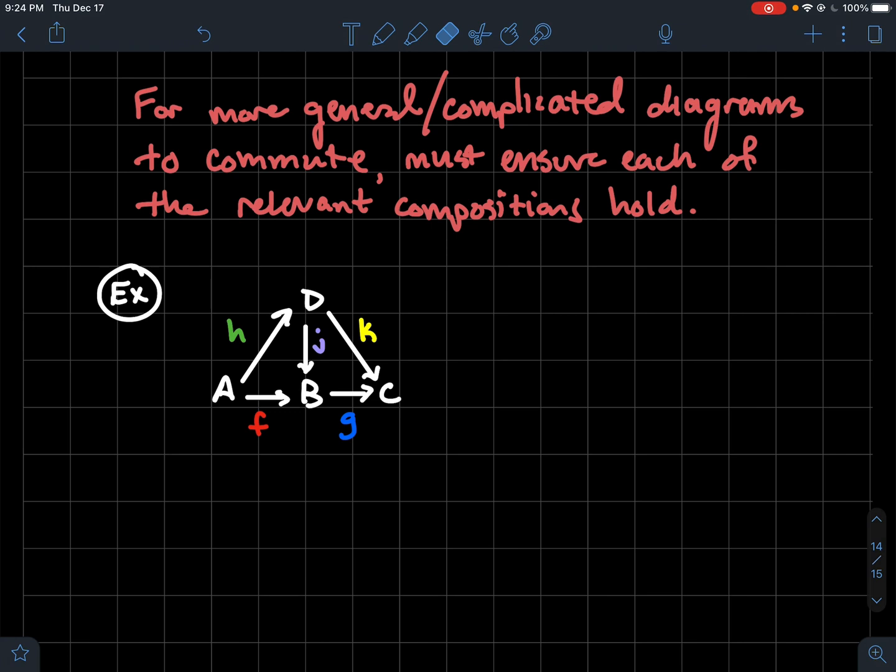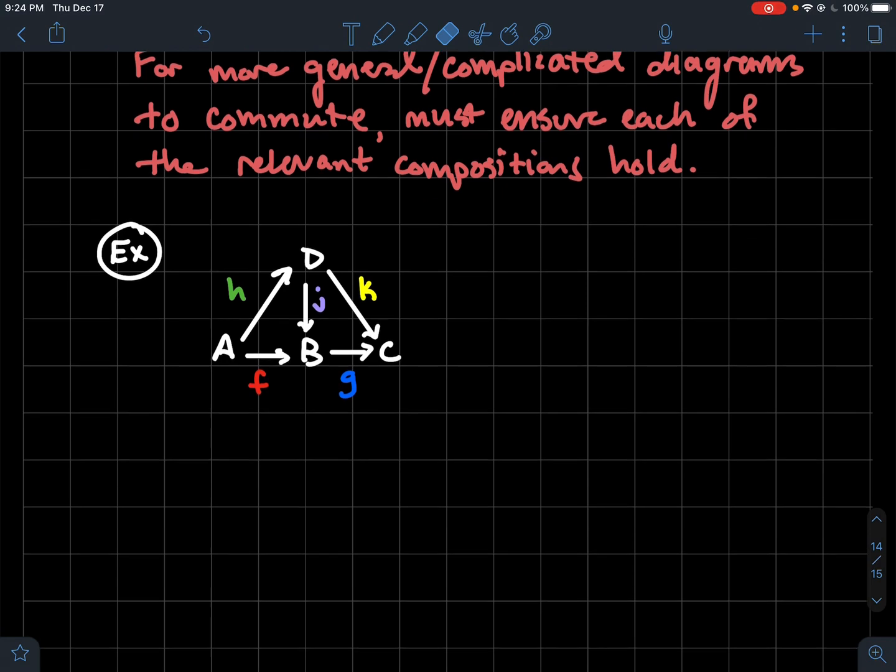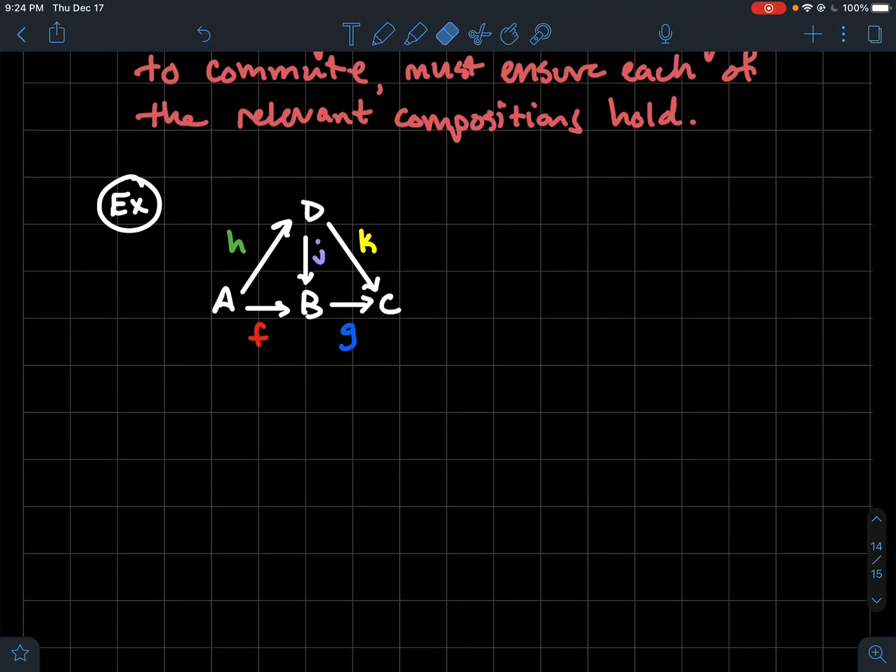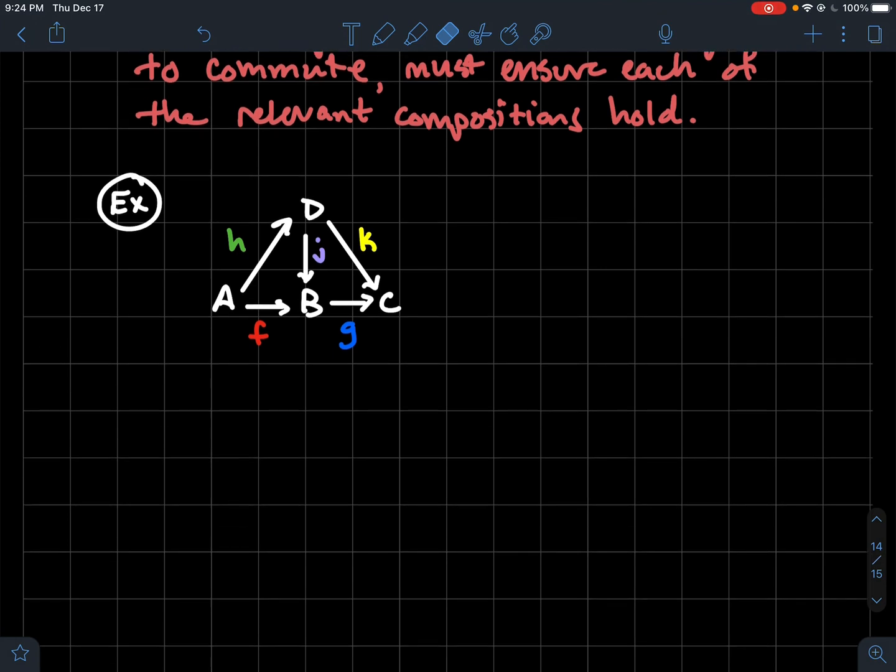So just to give you an example, this one is pretty similar to like, we're looking at Mendelssohn's topology book. But I've got one, two, three, four sets, a, b, c, and d. And I've got one, two, three, four, five functions there. If I wanted to say that this diagram commutes, here's some of the things that I need to check. So to say that this commutes, what does that mean?